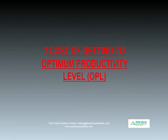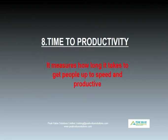Cost of getting to optimum productivity level. This is the total cost involved in getting someone up to speed. This would include things like onboarding costs, training costs, the cost of supervisors and coworkers involved in on-the-job training, and many more. Usually, a percentage of the employee's salary is also included in this calculation. Time to productivity measures how long it takes to get people up to speed and productive. It's the time between the first day of hiring and the point where the employee fully contributes to the organization.